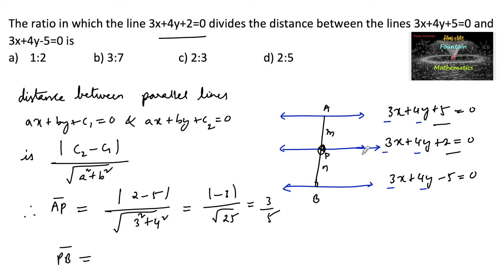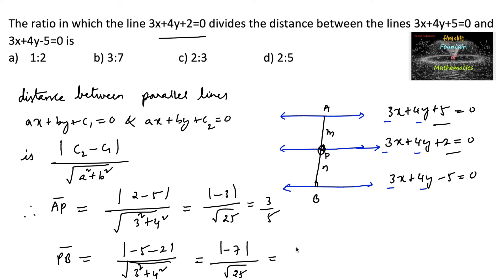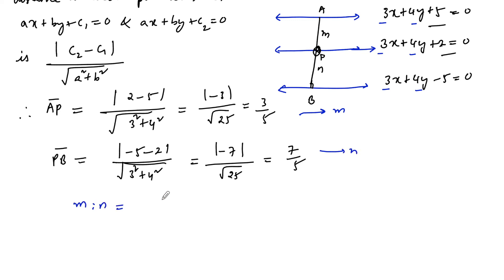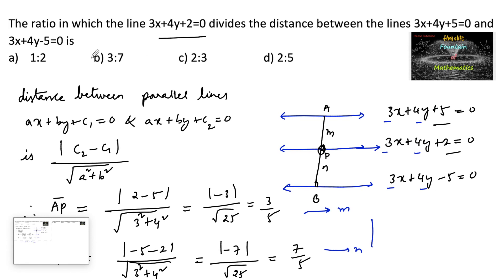Similarly, PB, the distance between the other two parallel lines, is |(-5) - 2| / √(3² + 4²) = |-7| / √25 = 7/5. So m = 3/5 and n = 7/5, therefore m : n = 3/5 : 7/5 = 3 : 7. The answer is option B, 3 : 7.